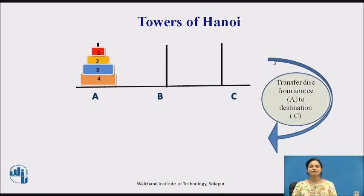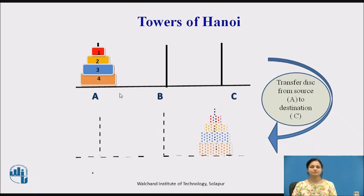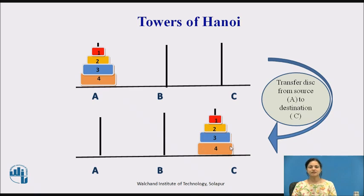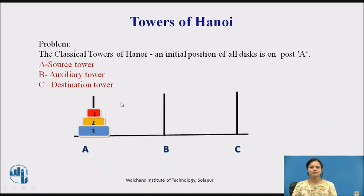So what do we have to do? We have to transfer the disks from the source to the destination. While sending from source to destination, B is the auxiliary, temporary, or intermediate tower. A is the source tower from where the disk has to be moved, B is the auxiliary tower we use for temporary support, and C is the destination tower.